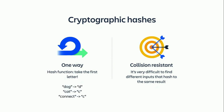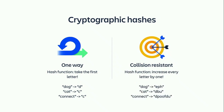For example, my hash could be to take the first letter of every word: 'dog' becomes D, 'cat' becomes C, and 'connect' also becomes C. But it's not a very good hash function because it's not collision-resistant — I can easily find another word that also hashes to C, such as 'carrot'. What about increasing every letter by one, kind of like a Caesar cipher? 'Dog' becomes EPH, 'cat' becomes DBU, and 'connect' becomes DPOFODU. That's definitely collision-resistant, but it's not a very good hash because it's not one-way — you can easily go from the output back to the input. In that sense, it's more like an encoding than a hash.